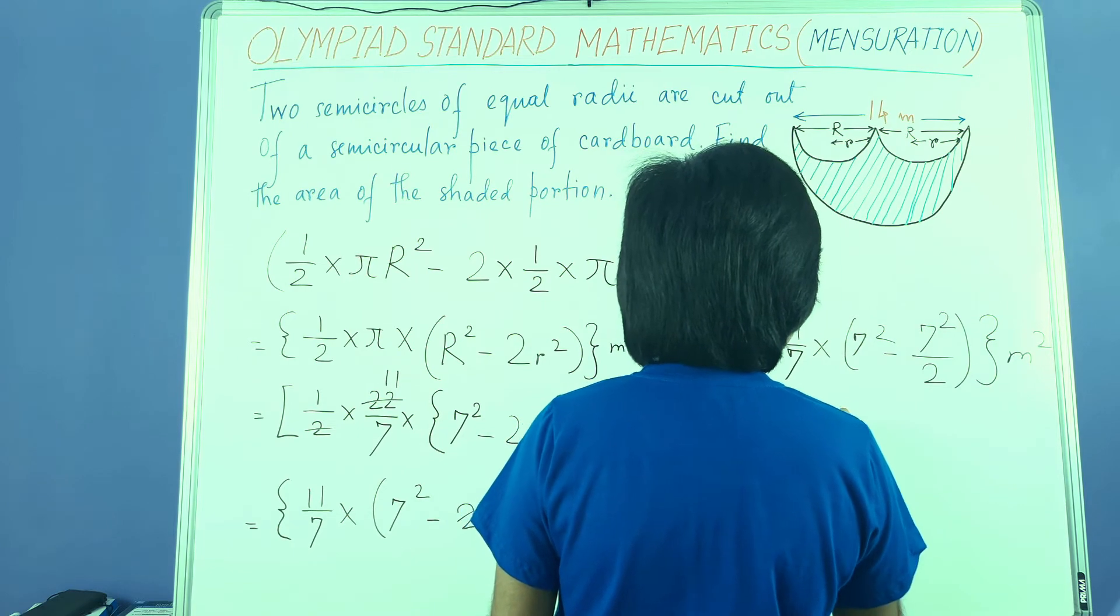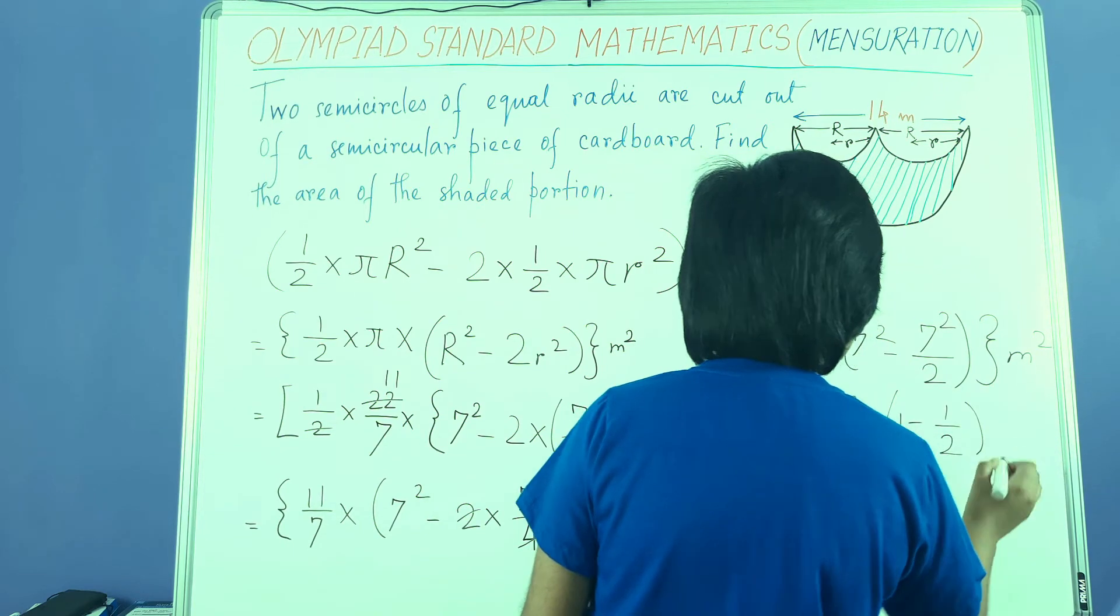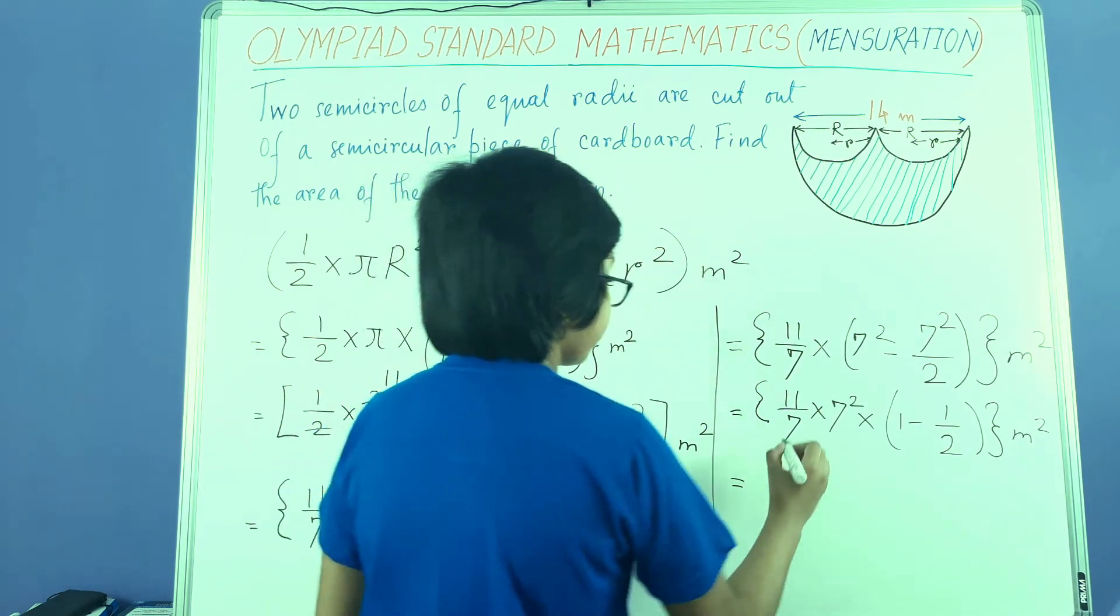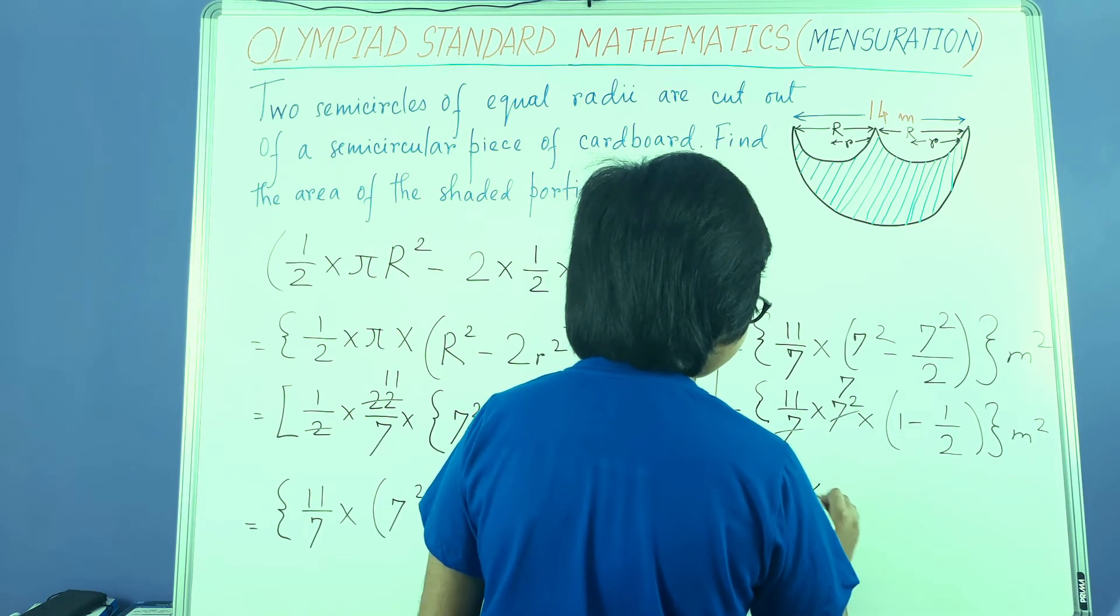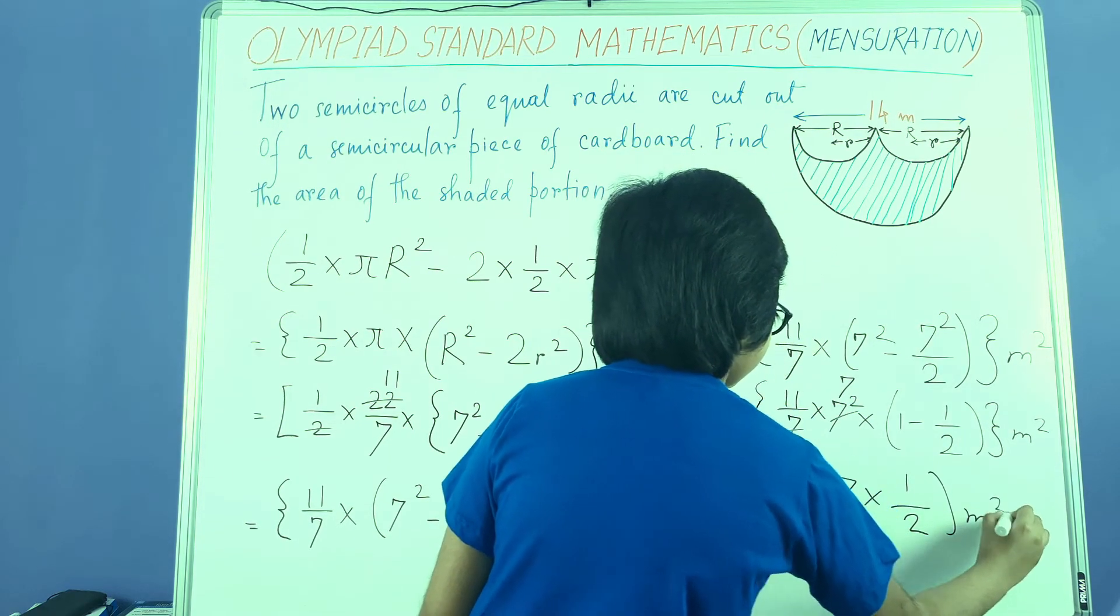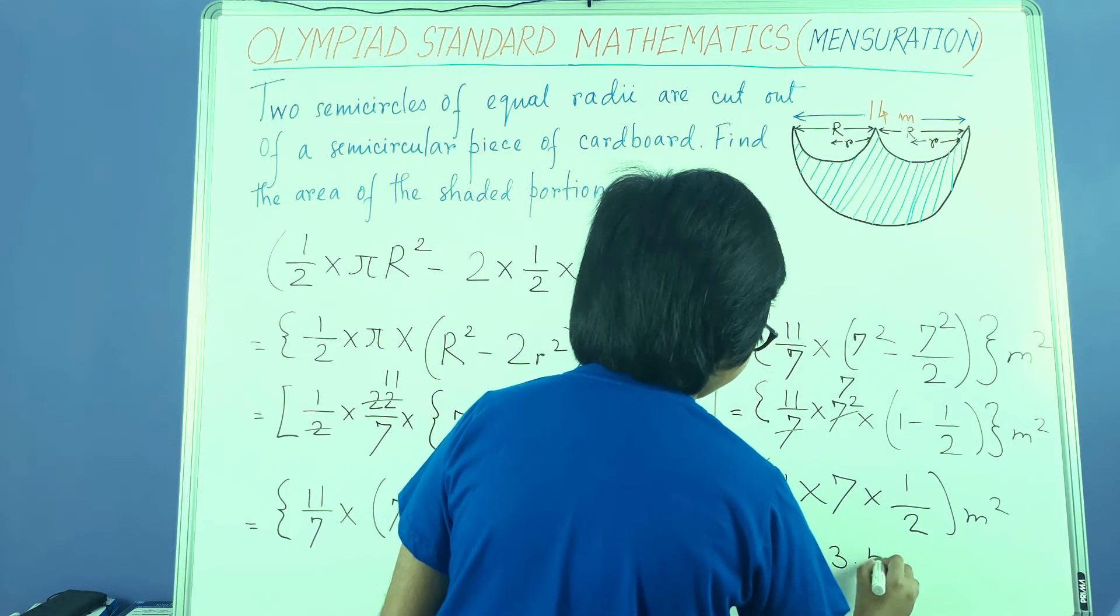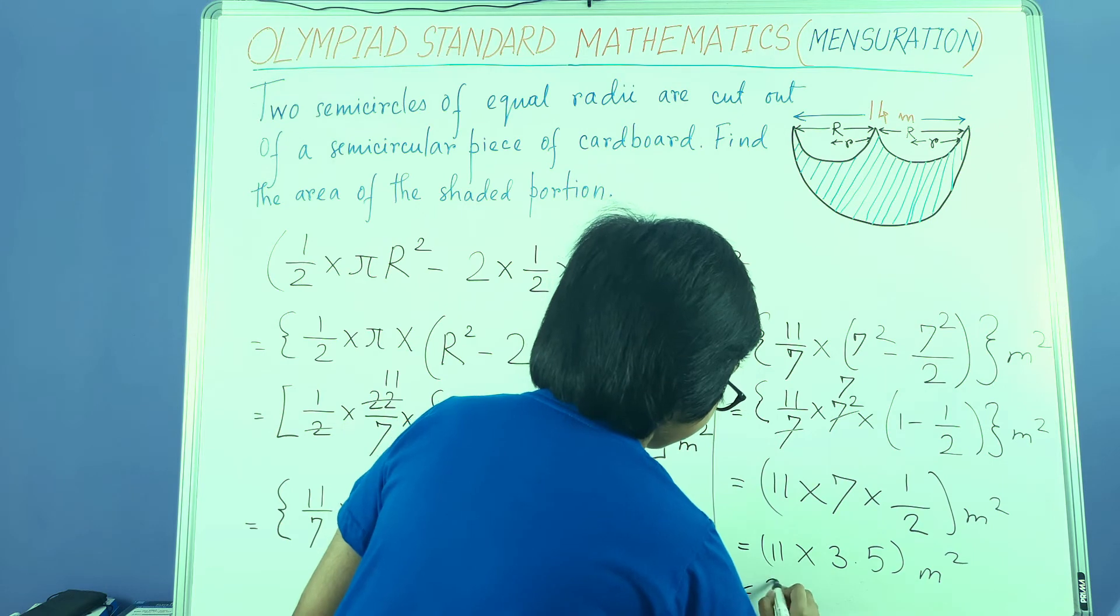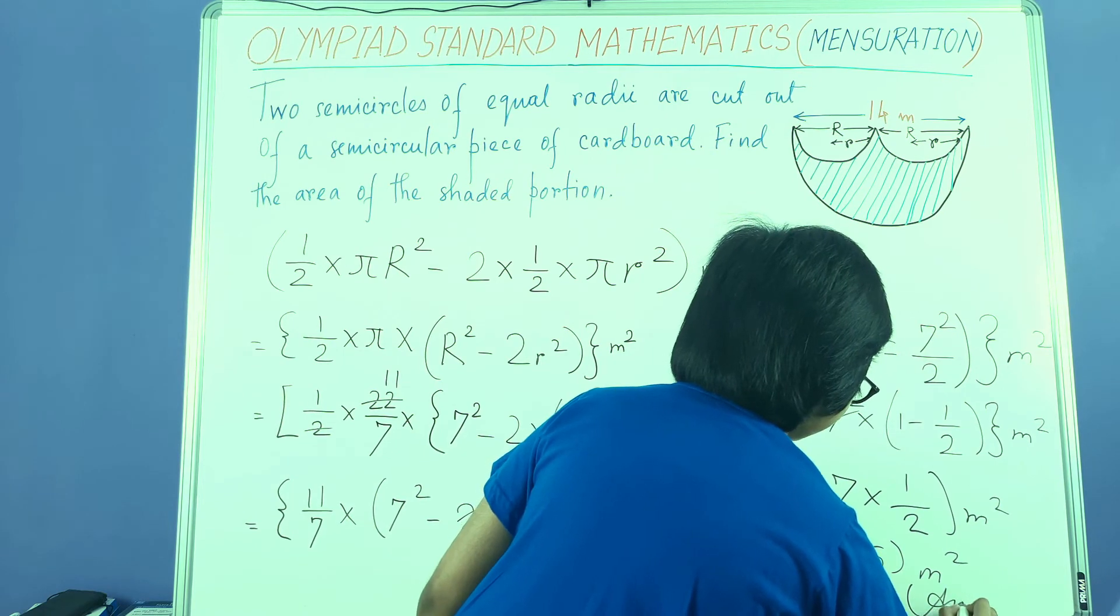We are taking 7 squared common. And this calculation can be done mentally to get 38.5 meters squared, which is our final answer.